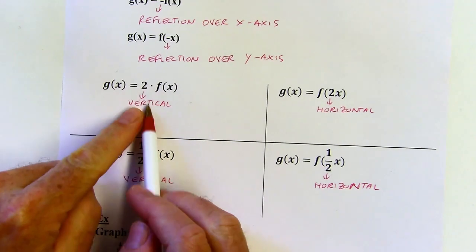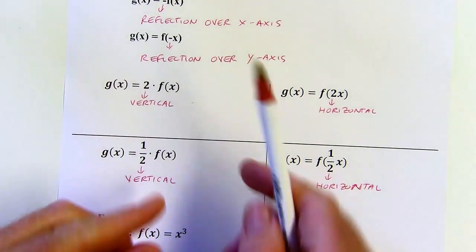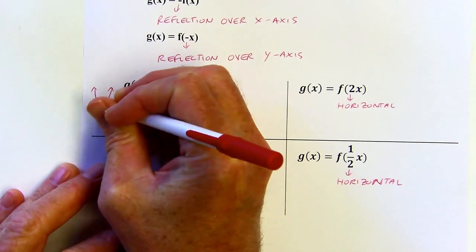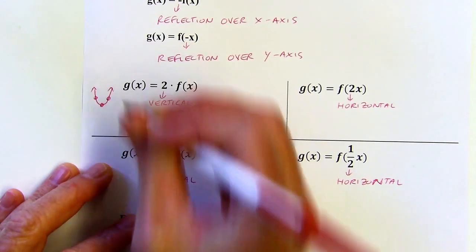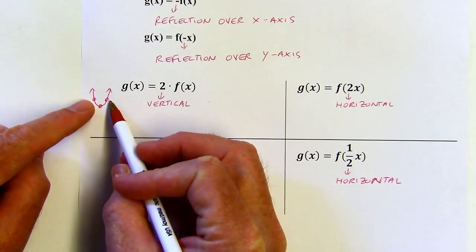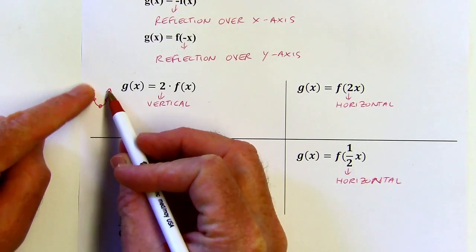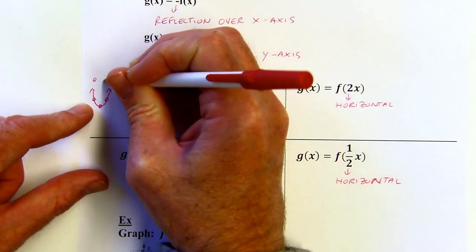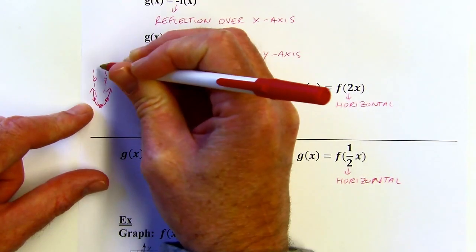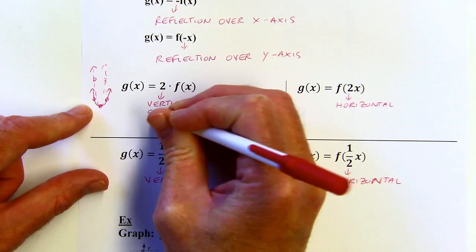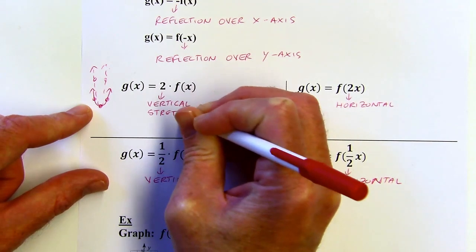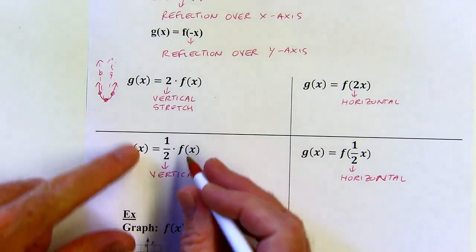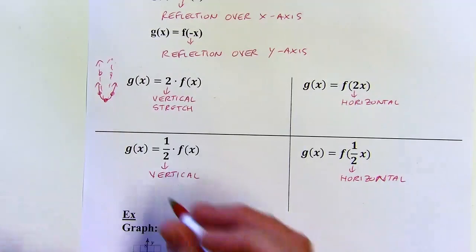If I think about a parabola getting narrower with a vertical change, let me draw a parabola. If I've got a parabola and I want it to get narrower with a vertical change, the vertex is going to stay put, but those two points can only move up or down. For this to get narrower, they'd have to move up. So that means this is going to be a vertical stretch. And if that's a vertical stretch, then this is going to be a vertical compression because it's going to get wider with a vertical change.